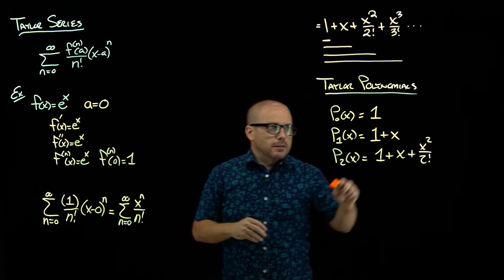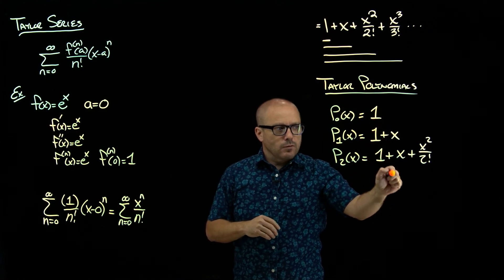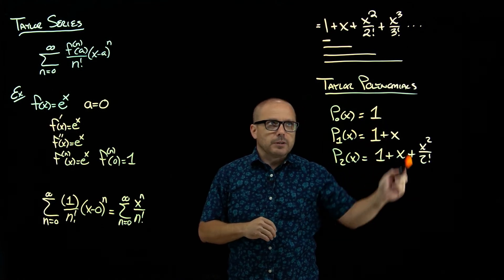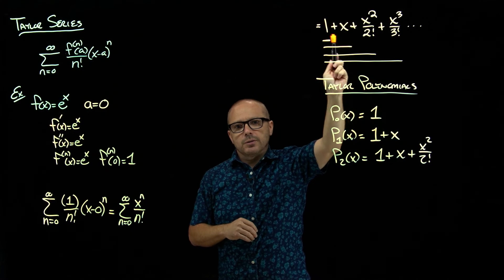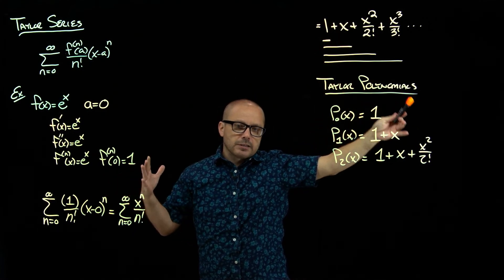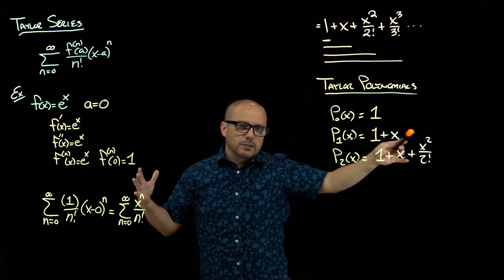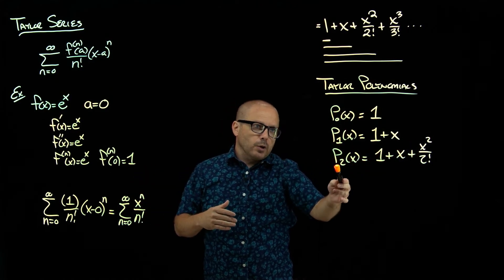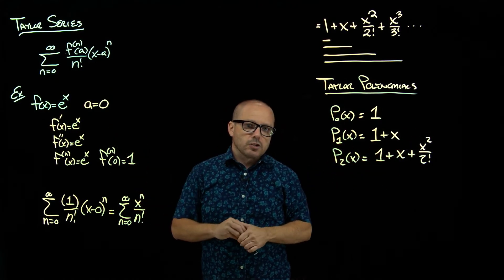So what happens as we go farther and farther up in these Taylor polynomials or get closer and closer to the actual full series? So I want to look at some graphs in Desmos and we'll take a look at how these polynomials relate to that function.